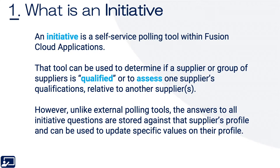First topic: what is an initiative? An initiative is a self-service polling tool within Fusion. That tool can be used to determine if a supplier or group of suppliers is — air quotes — qualified, or to assess one supplier's qualifications relative to another supplier's. However, unlike external polling tools, the answers to all initiative questions are stored against that supplier's profile and can be used to update specific values on their profile. So in short, think about something like Survey Monkey or Poll Anywhere, but the data isn't resident in that tool.